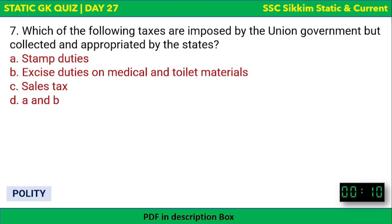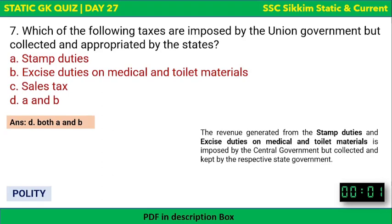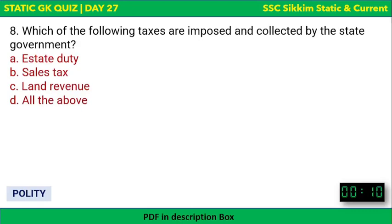Next: Which of the following taxes are imposed by the union government but collected and appropriated by the states? Options are stamp duties, excise duties on medical and toilet preparations, sales tax, or both A and B. The correct answer is both A and B — stamp duties and excise duties on medical and toilet preparations are imposed by the central government but collected and kept by the respective state governments.